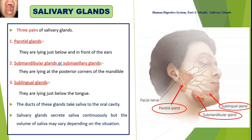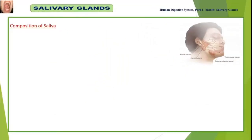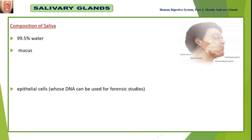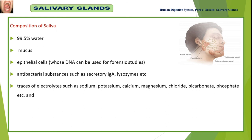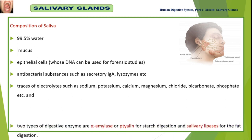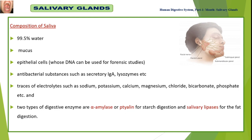Salivary glands secrete saliva continuously, but the volume of saliva may vary depending on the situation. Composition of human saliva: saliva contains 99.5% water, mucus, epithelial cells whose DNA can be used for forensic studies, antibacterial substances such as secretory IgA and lysozymes, traces of electrolytes such as sodium, potassium, calcium, magnesium, chloride, bicarbonate, and phosphate, and two types of digestive enzymes — alpha amylase (also called ptyalin) for the digestion of starch, and salivary lipase for the digestion of fat.